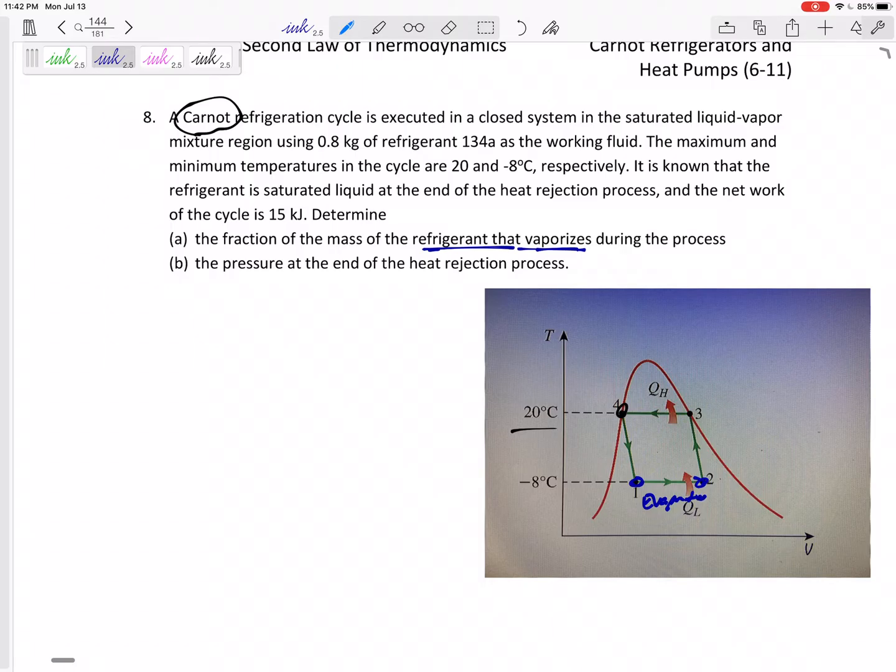This is the evaporator part of the refrigeration cycle. This would be the compressor, this is the condenser, and this is maybe the throttling valve from 4 back to 1. It is the evaporator because some of the working fluid evaporates—it goes from liquid to gas because it's accepting that QL from the refrigerated space.